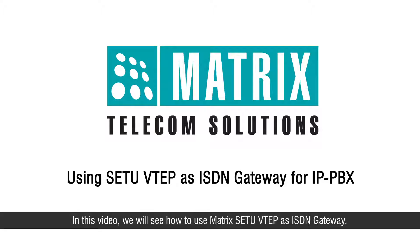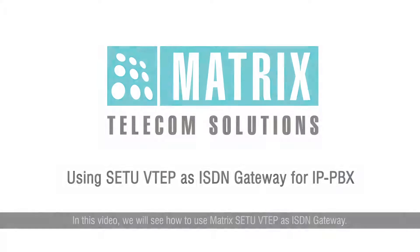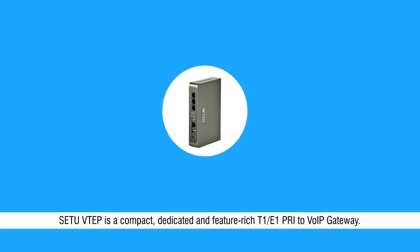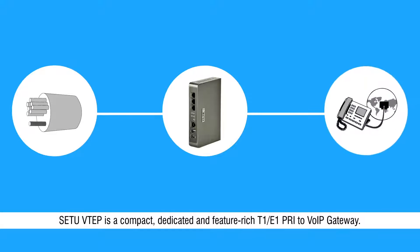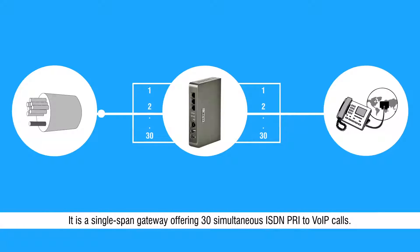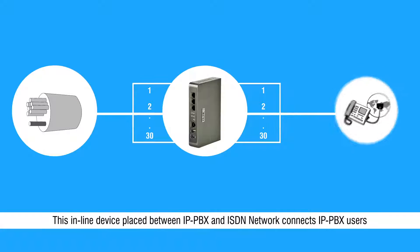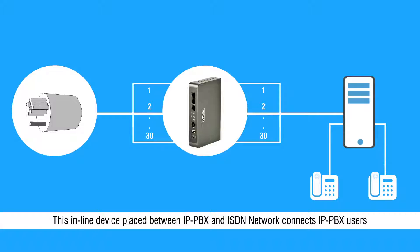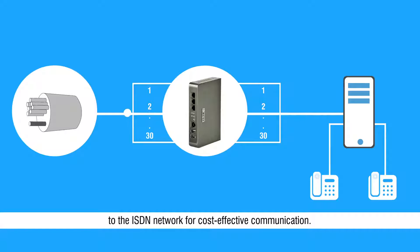Hello friends. In this video we will see how to use Matrix Setu VTAP as ISDN gateway. Setu VTAP is a compact, dedicated and feature-rich T1E1 PRI to VoIP gateway. It is a single span gateway offering 30 simultaneous ISDN PRI to VoIP calls. This end-line device, placed between IP PBX and ISDN network, connects IP PBX users to the ISDN network for cost-effective communication.